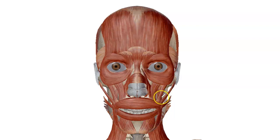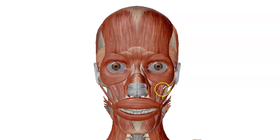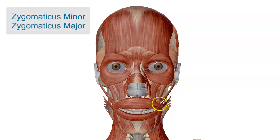Right next to that we have the muscle attached to the cheekbone, called the zygomatic bone, so these are called the zygomaticus minor and zygomaticus major.